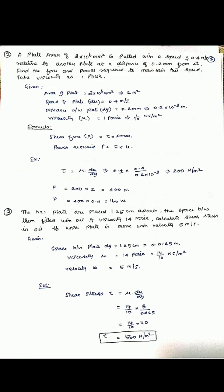Problem 2: A plate of area 10 × 10^6 mm² is pulled with a speed of 0.4 m/s relative to another plate at a distance of 0.2 mm from it. Find the force and power required to maintain the speed. Take viscosity as 1 Poise. Area converted to meter square; du equals 0.4 m/s; dy equals 0.2 mm equals 0.2 × 10⁻³ m; mu equals 1 Poise equals 0.1 N·s/m².